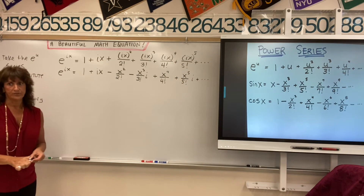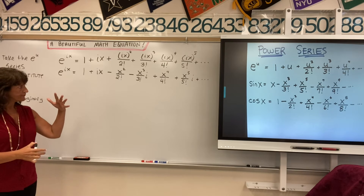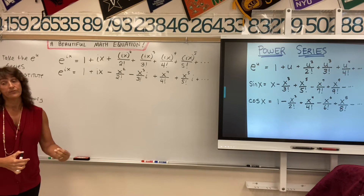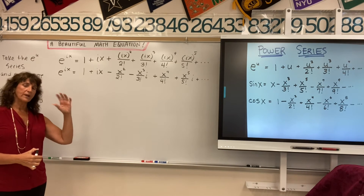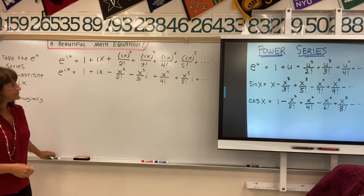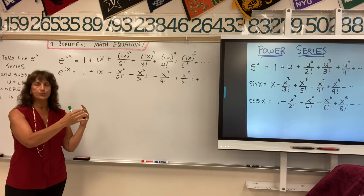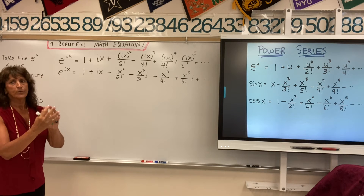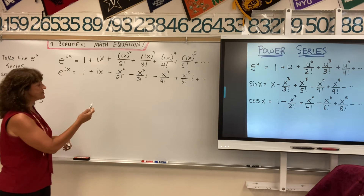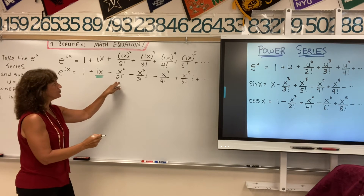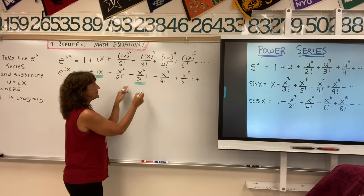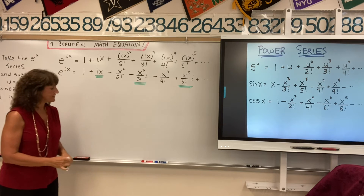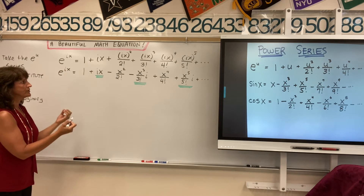So now we have this expanded out. Remembering: i squared is negative 1, i cubed is negative i, i to the 4th is positive 1, and i to the 5th cycles back to i. What we'd like to do next is separate our terms — we're going to regroup. We'll put the real terms together and the imaginary terms together. You can see 3 of the 6 terms have an i, and 3 don't.